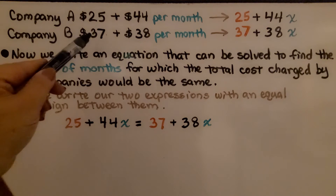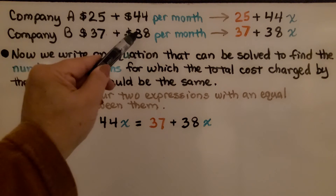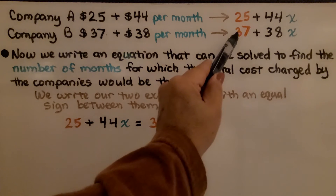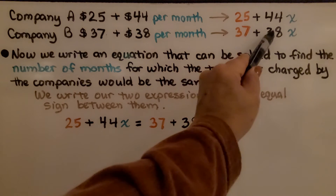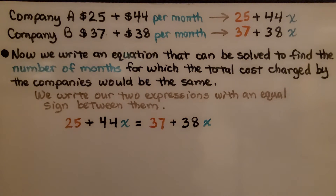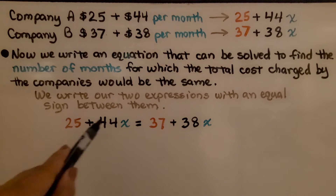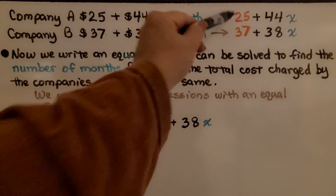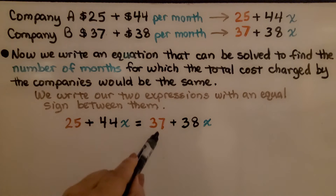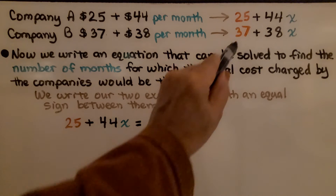Company B was $37 plus $38 per month, giving us the expression 37 plus 38x. Now we write an equation that can be solved to find the number of months for which the total cost charged by the companies would be the same. We write our two expressions with an equal sign between them: 25 plus 44x is equal to 37 plus 38x.